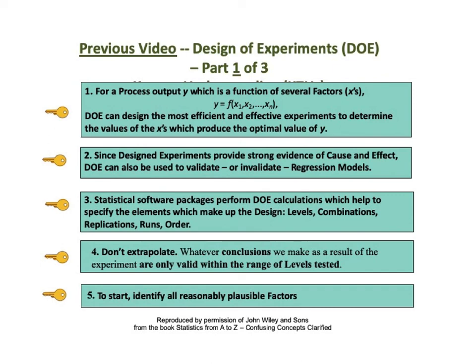KTU number 2 says, Since designed experiments provide strong evidence of cause and effect, DOE can be used to validate or invalidate regression models. KTU number 3 says, Statistical software packages perform DOE calculations which help to specify the elements which make up the design. These elements are levels, combinations, replications, runs, and order.